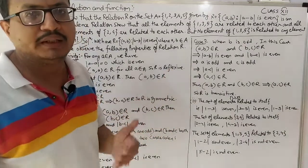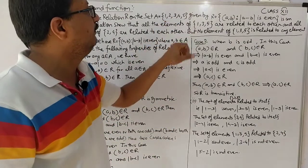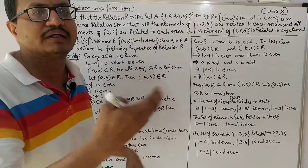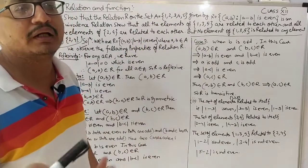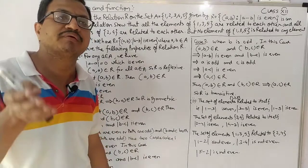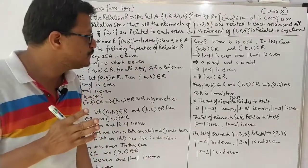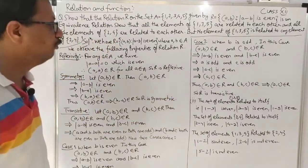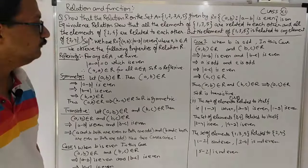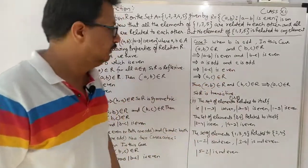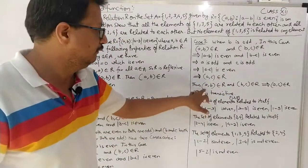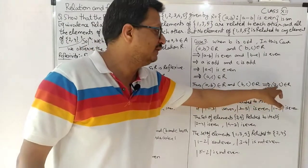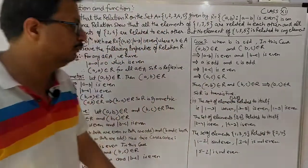Example: 1, 3, 5 लिया। 1-3 का difference 2 हुआ, 3-5 का difference 2 हुआ - दोनों even। So in both cases (a, c) belongs to R. Thus (a, b) belongs to R and (b, c) belongs to R implies (a, c) belongs to R. Therefore R is transitive। यह इस तरीके से exam में समझाना है।